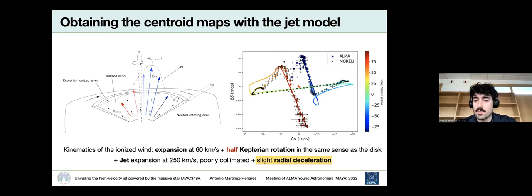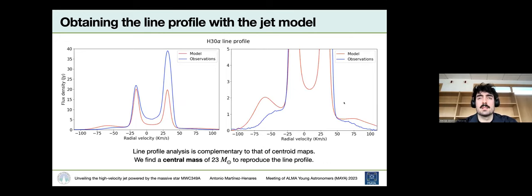Not only we model the centroid position from the emission, but also the line profile, which is a complementary analysis. It breaks some degeneracies that we have with the centroid map. The most important outcome from this result would be the central mass, which is of 23 solar masses, according to our model.